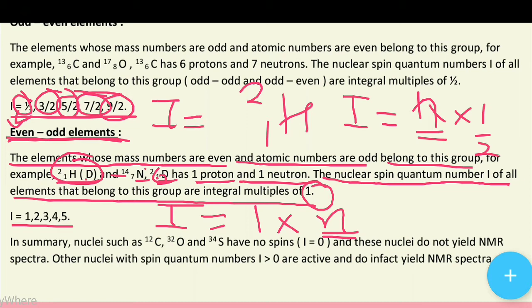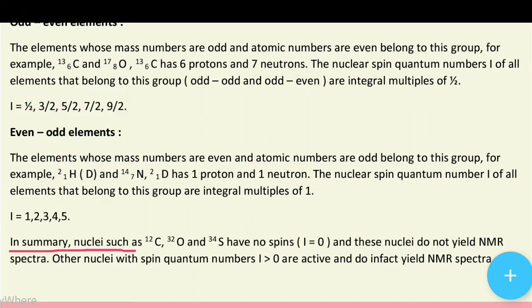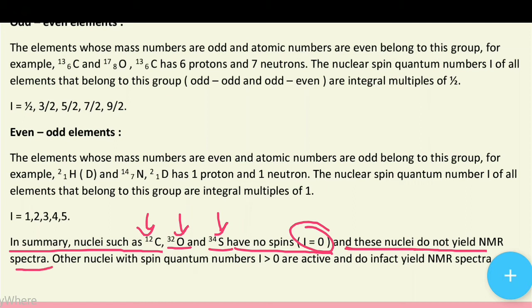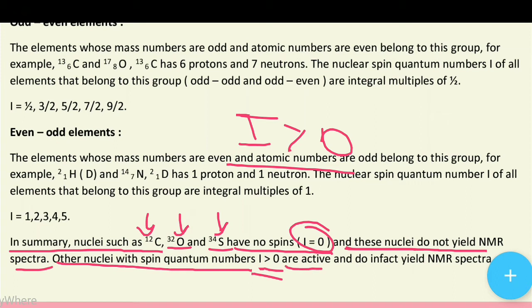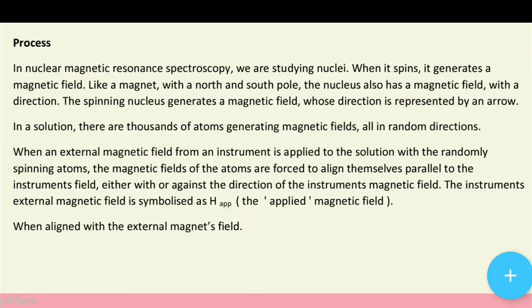In summary: when both mass number and atomic number are even (even-even), I = 0. Nuclei such as carbon-12, oxygen-16, and sulfur-32 have no spin — I equals zero — and do not yield NMR spectra. Other nuclei with spin quantum number I greater than zero are active and do yield NMR spectra.